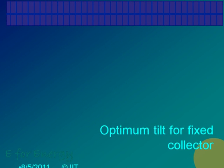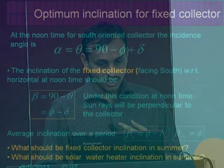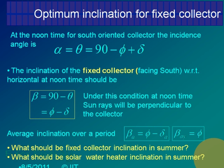Optimum tilt for the fixed collector: if you want to fix the collector, the optimum tilt is the latitude angle for the whole year. But if you want one fixed angle per month, you can change once a month. Since delta changes month to month, your inclination of the collector is phi minus delta. Phi is fixed — latitude does not change — but delta changes. So if you want to find the beta for a given month, find the average value of delta for that month.